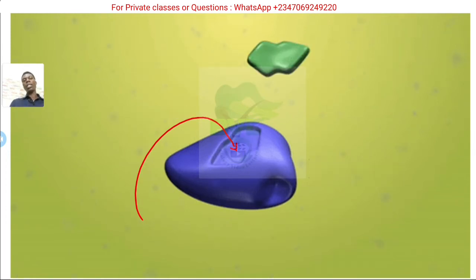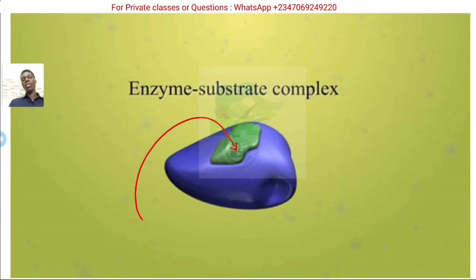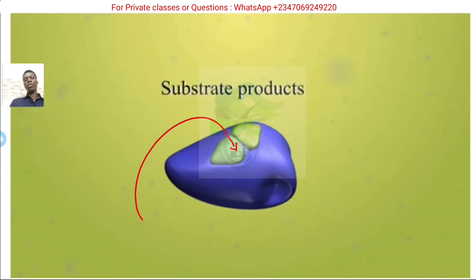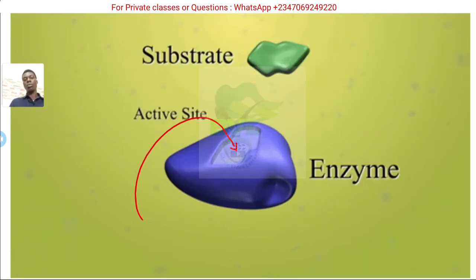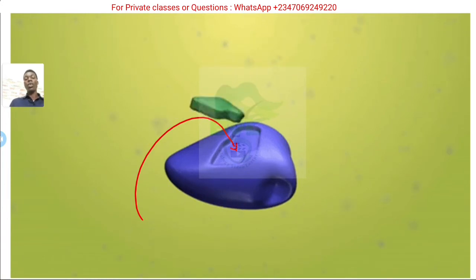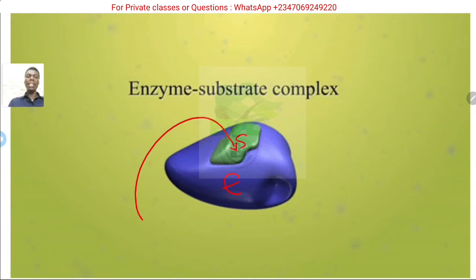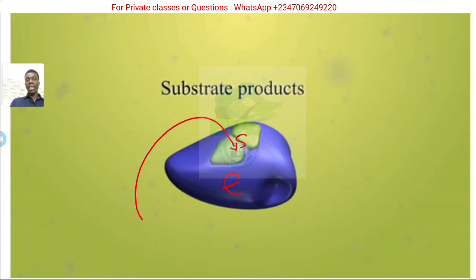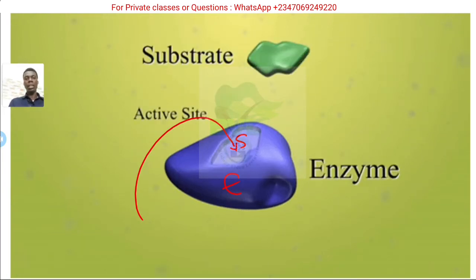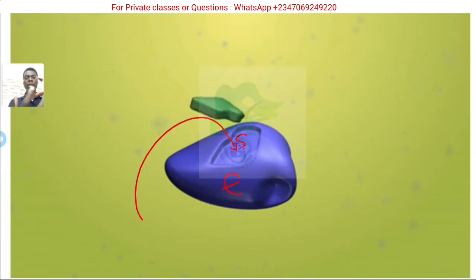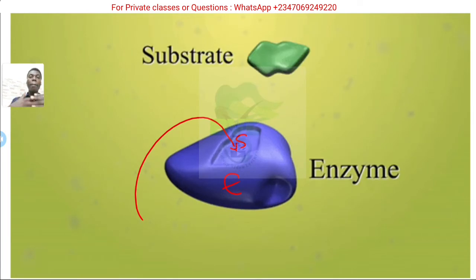So, you notice that when it's bound to that active site, after some time, it's split into two. It has broken in that. So, we have the enzyme substrate. This is the substrate that you can see. It broke into two. Then the reaction has finished, so to say. But the point is, the lock and key model tells you how enzymes and the substrate bind together perfectly to bring about the reaction.